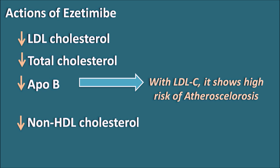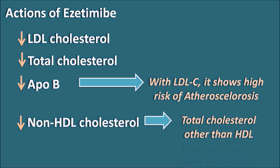Ezetimibe also decreases non-HDL cholesterol. Whatever cholesterol is present other than HDL cholesterol is called non-HDL cholesterol. So Ezetimibe can decrease all types of cholesterol other than HDL. HDL is the good cholesterol which should be increased, not decreased. Ezetimibe can also decrease triglycerides, which are carried through VLDL lipoproteins. So Ezetimibe can decrease VLDL levels, thereby also decreasing triglyceride levels.